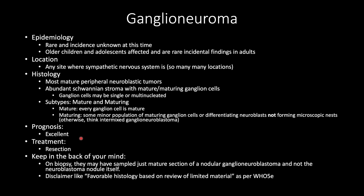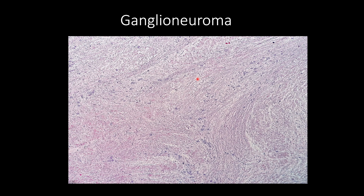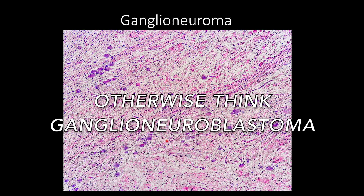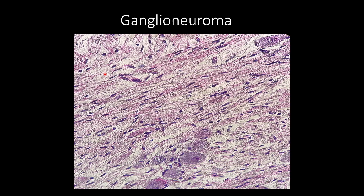Keep in the back of your mind that on biopsy, they may have sampled just the mature section of a nodular ganglioneuroblastoma and not the neuroblastoma nodule itself. So a disclaimer can include 'favorable histology based on review of limited material,' as per the WHO 5th edition. Here is ganglioneuroma: we don't see a neuroblastoma element — we see white parenchyma with a glistening nodular structure. Microscopically, we see abundant Schwannian stroma, ganglion cells not forming nests, with amphiphilic cytoplasm and central to eccentric nucleus with a prominent nucleolus.